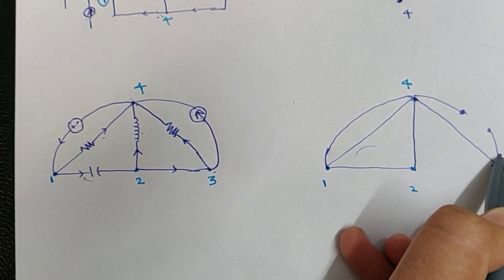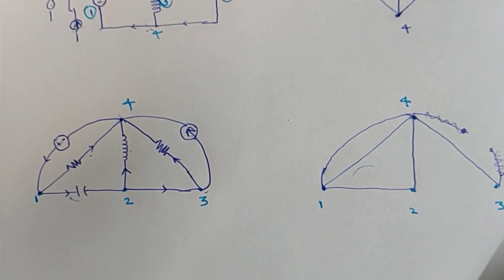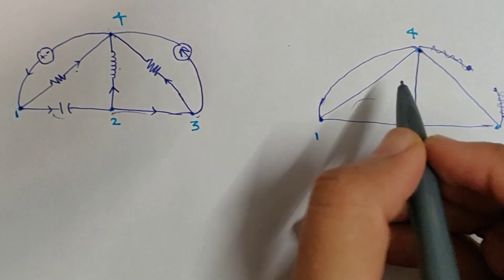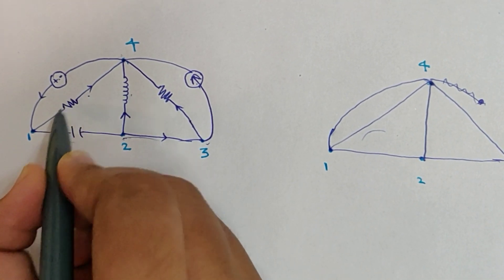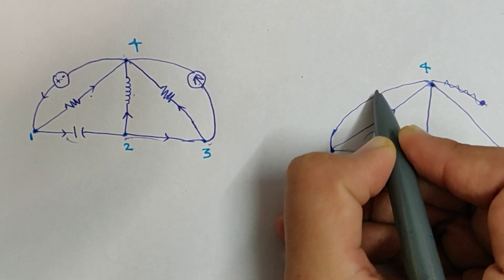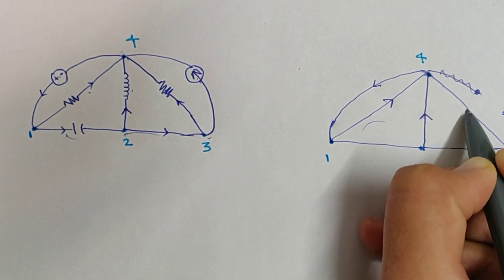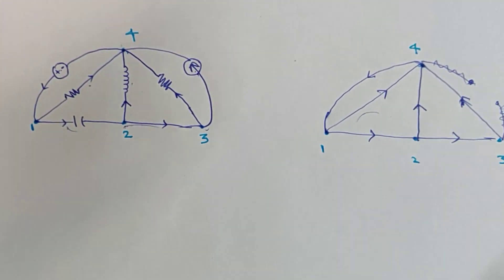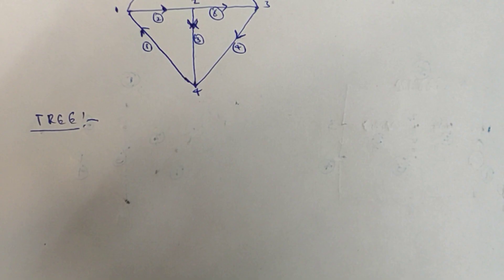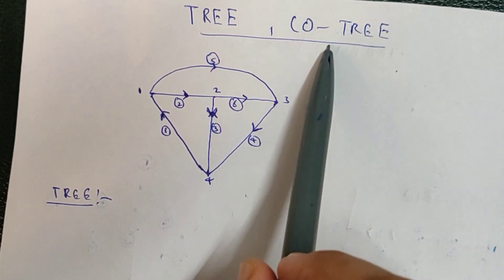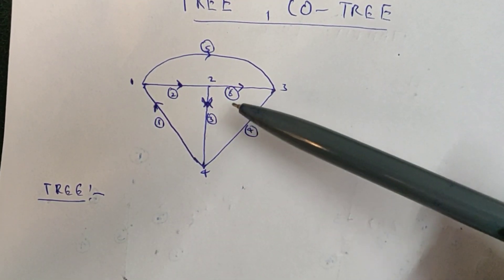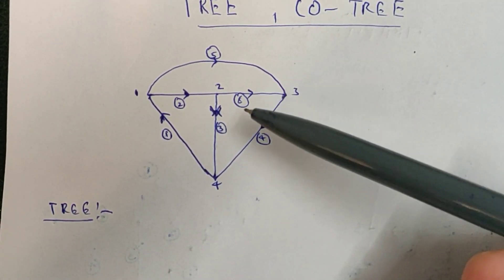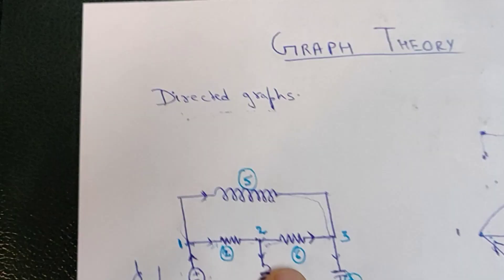The current source between four and three will be kept open circuited. I'm drawing it here just to make the concept clear — in the actual graph it is not drawn. The voltage source has zero impedance and is replaced by a line. Now for the directed graph we put arrows: current flows from one to four here, in this direction here, this direction, and this direction. This is the directed graph of this circuit. Now we will study how to draw the tree and co-tree of a given directed graph.